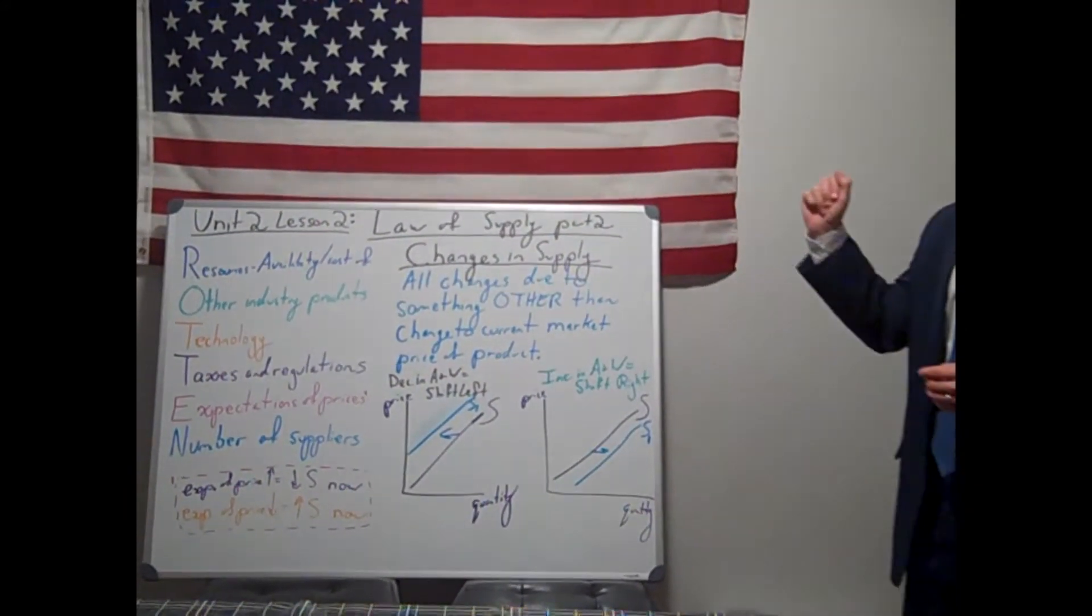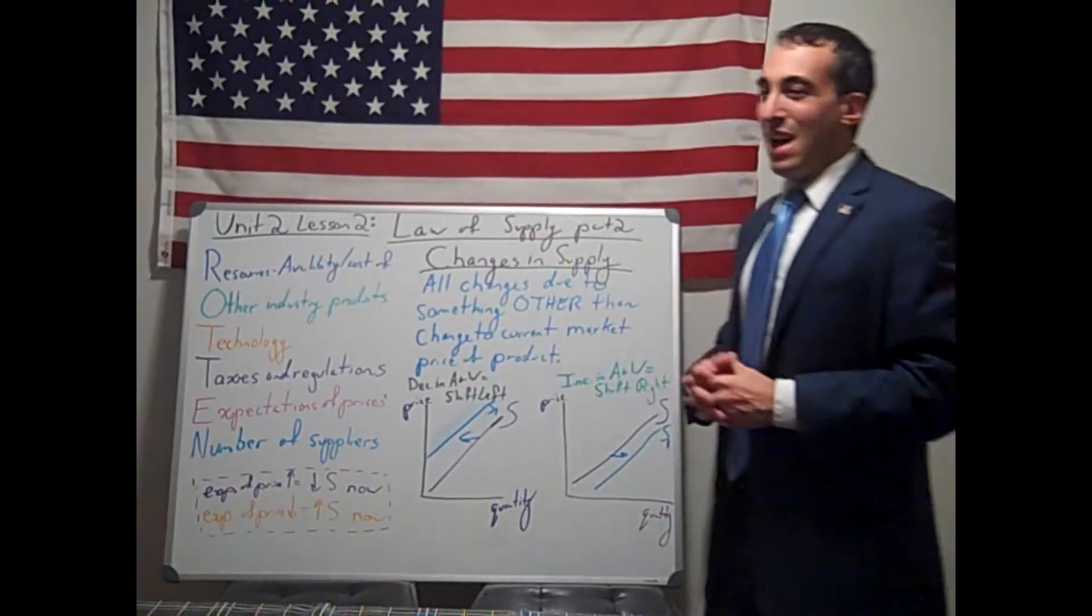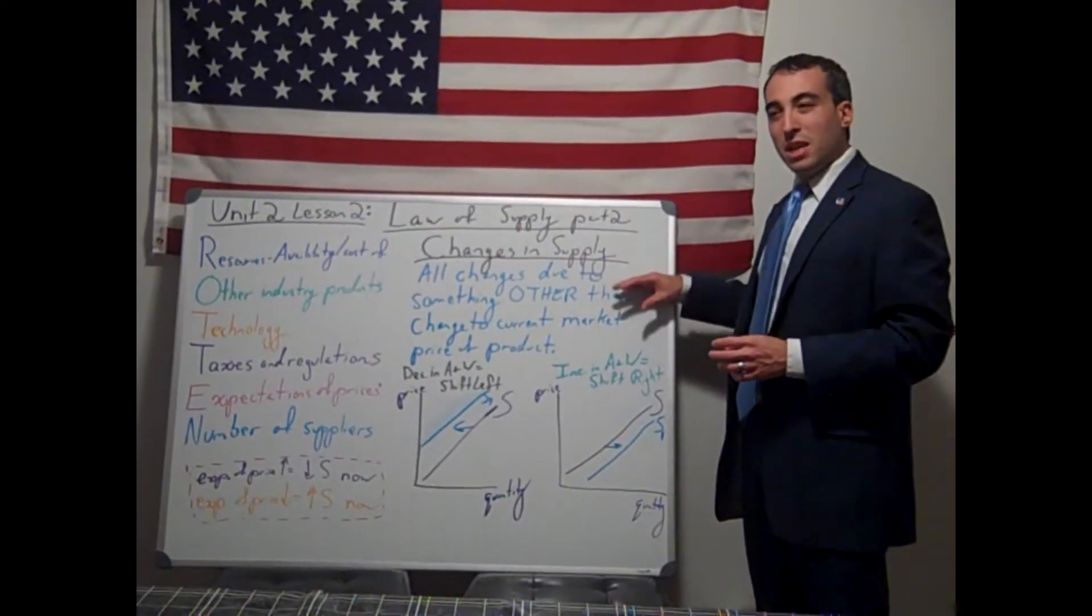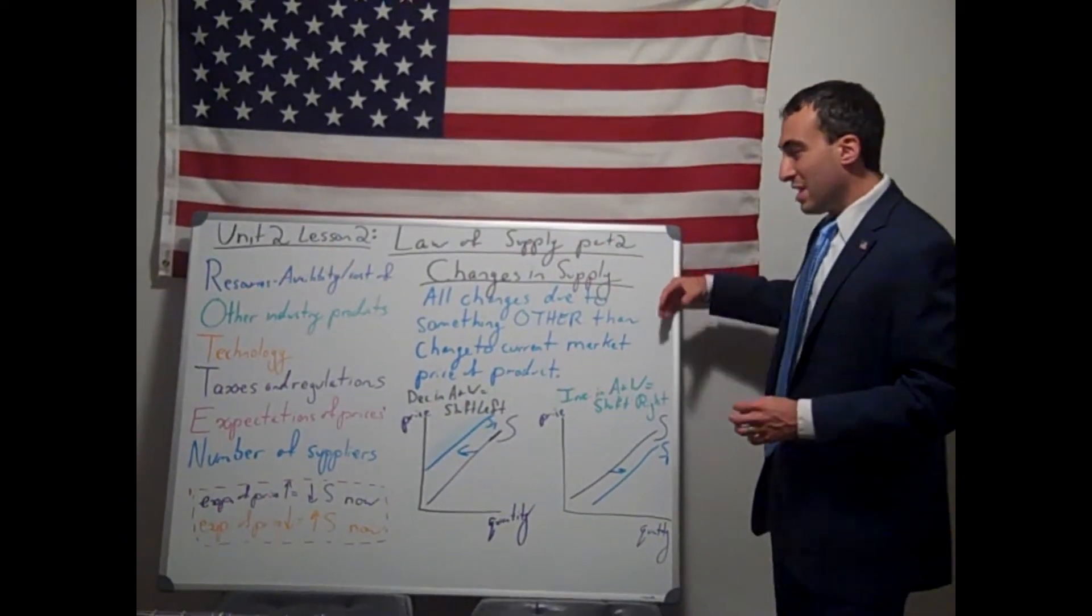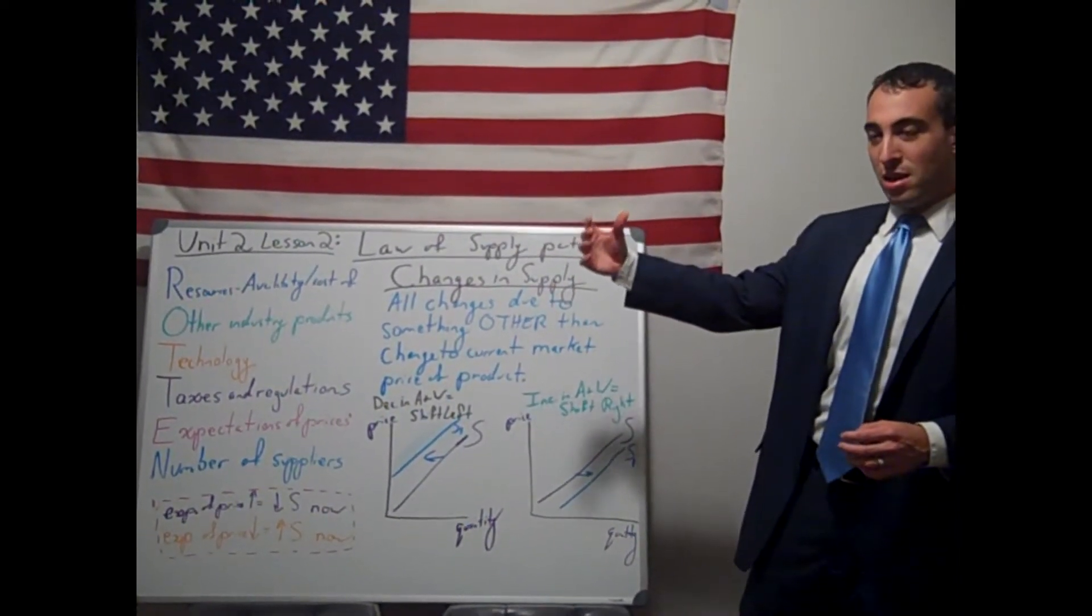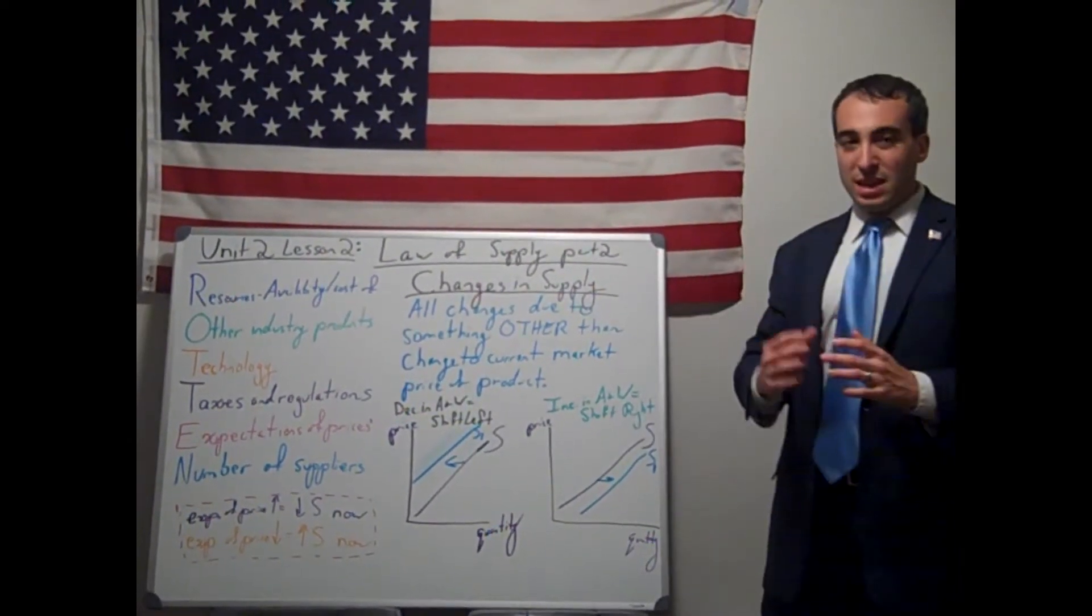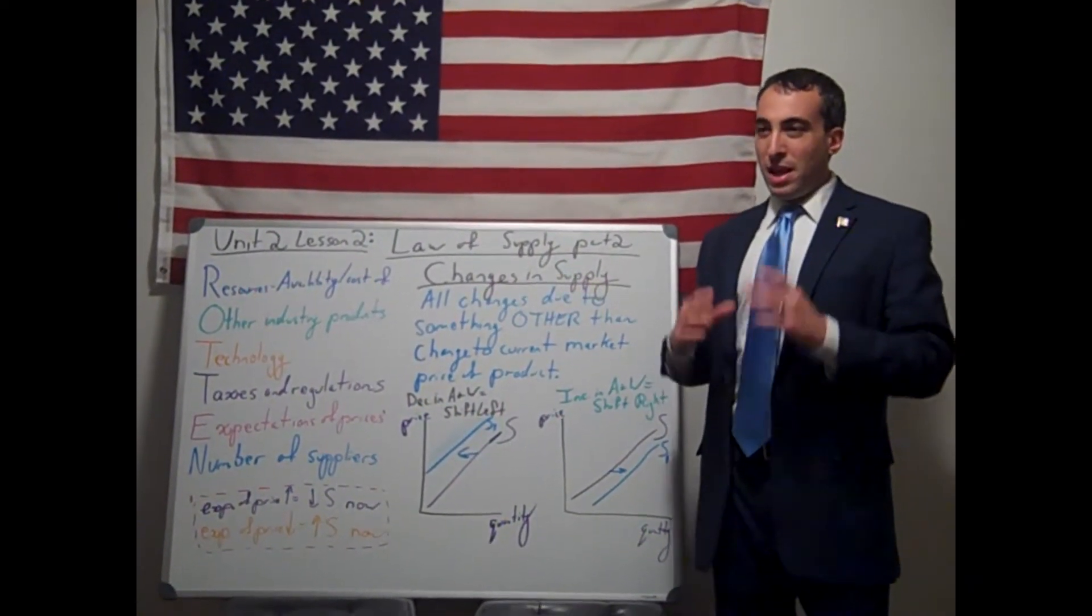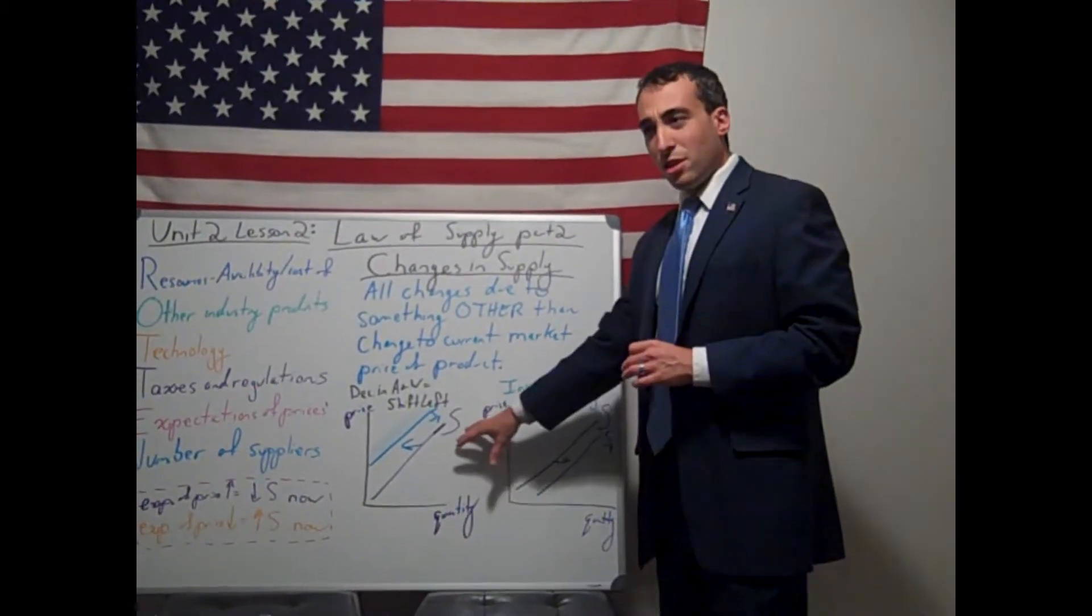So, our acronym for today is ROTTEN, and each of these words has something to do with changing the ability and willingness of businesses to supply their products. A positive change in ability and willingness to supply will increase the supply curve and will shift it to the right. A negative effect on the ability and willingness will decrease the supply curve and shift it to the left.